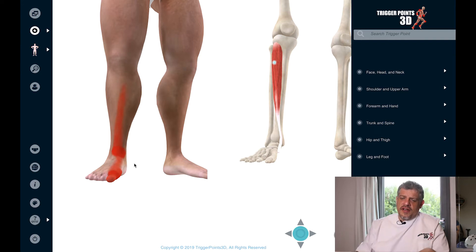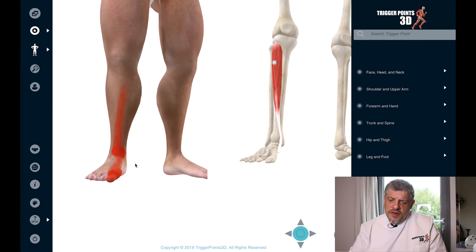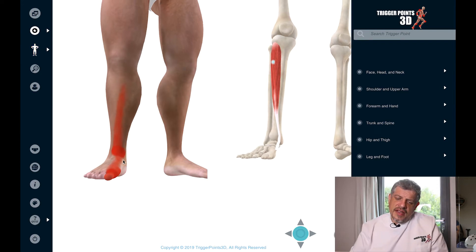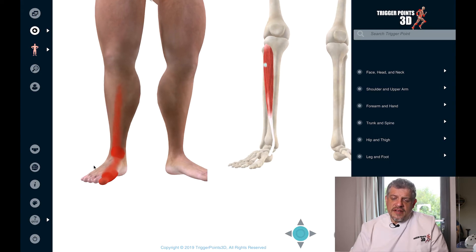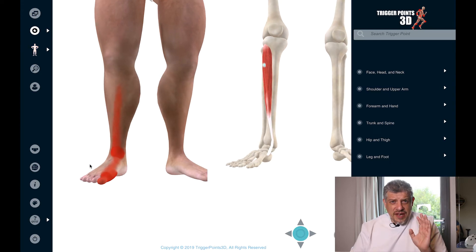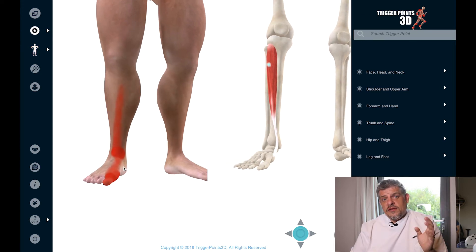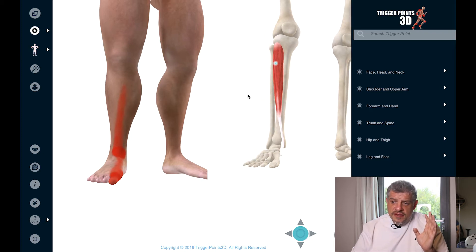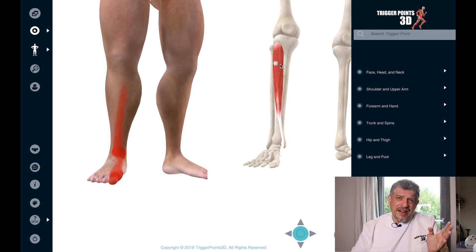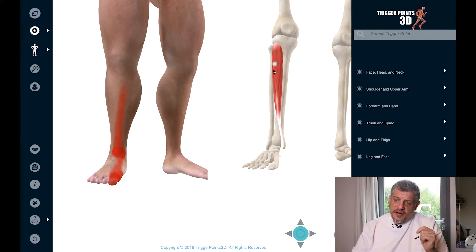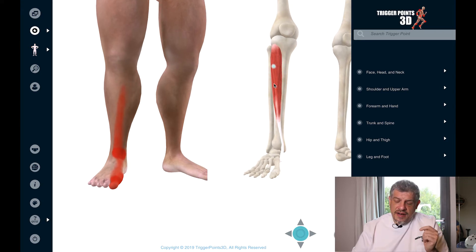In terms of differential diagnosis, of course we know that things like gout can cause pain in the big toe. But interestingly, you can sometimes find tibialis anterior trigger points in people that have gout, and treating them can actually reduce the great toe pain as well.